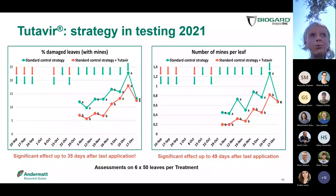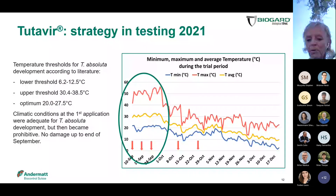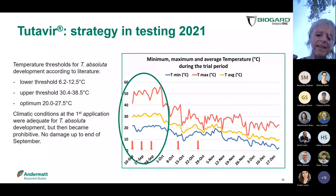The reason we did not see any damage before the 2nd of November was the late summer of 2021. For those of you who were on holiday in Sicily in 2021, you may recall it was extremely hot. It is known that maximum temperatures above 50 degrees inside the greenhouse are prohibitive for the development of Tuta absoluta. So the applications that actually had an effect on the population were the ones starting from October onwards.